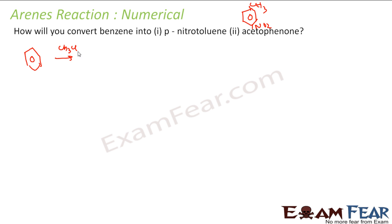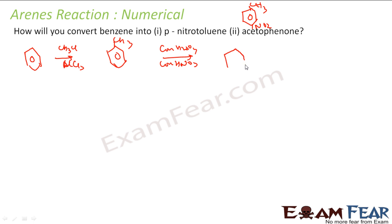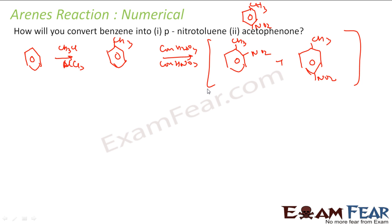First I add CH3 to benzene using CH3Cl with AlCl3 to get toluene. Once I have toluene, I perform nitration easily using concentrated H2SO4 and concentrated HNO3. Because CH3 is an ortho/para director, I get NO2 at the ortho position and also at the para position. I can then use fractional distillation to separate the para-nitrotoluene.